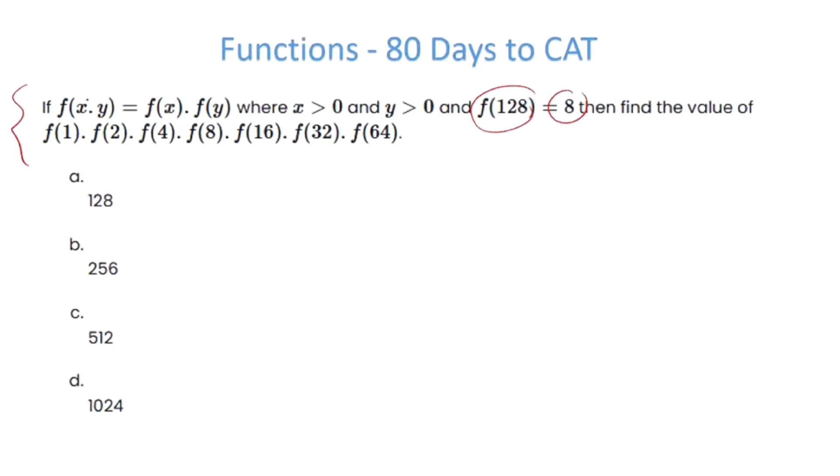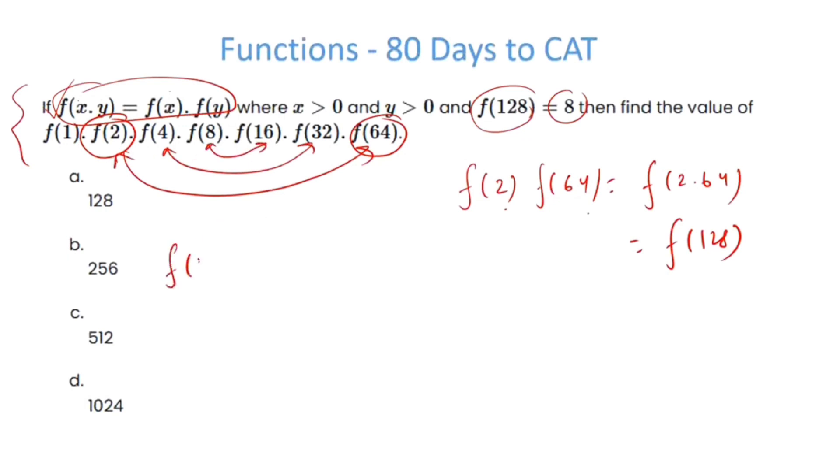Now see the pattern here. f(x times y) is fx times fy. So therefore f2 times f64 is f128, f4 times f32 is f128, and f8 times f16 is f128. So basically we have to find the value of f1 times f2 times f64 times f128, f4 times f32 times f128, and f8 times f16 times f128.